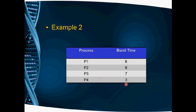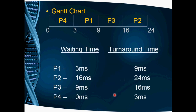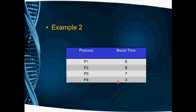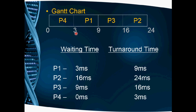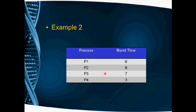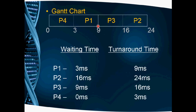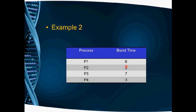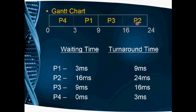We start from 0 milliseconds. P4 has burst time 3, so it executes from 0 to 3 milliseconds. Once P4 is completed, the remaining 3 processes are considered. P1 has burst time 6, which is the smallest among P1, P2, and P3, so P1 executes next from 3 to 9 milliseconds. Then P3, with burst time 7, executes from 9 to 16 milliseconds. Finally, the last process P2 has burst time 8 and executes from 16 to 24 milliseconds.